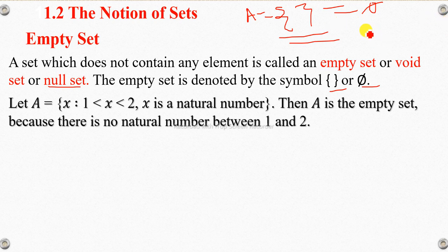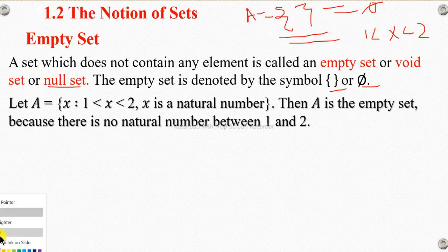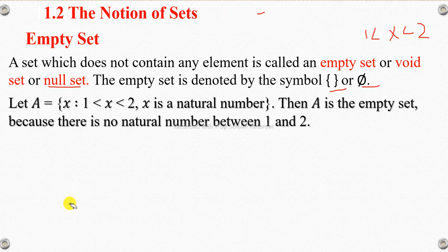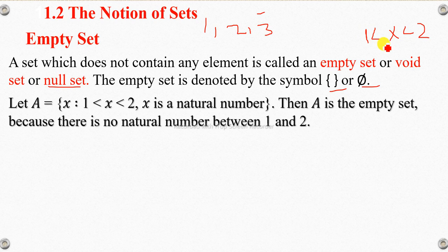We need to find the natural number x such that one is less than x less than two. We'll find out the natural numbers of x, where x is greater than one and less than two.